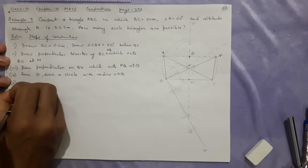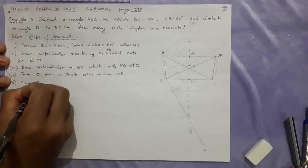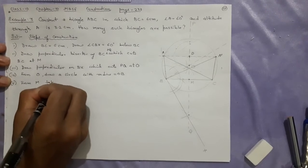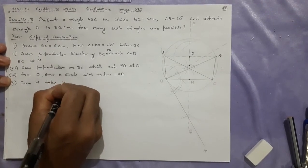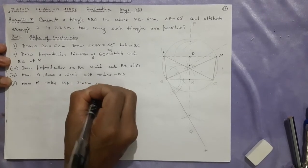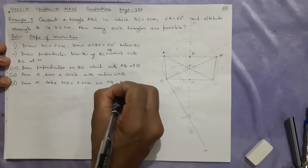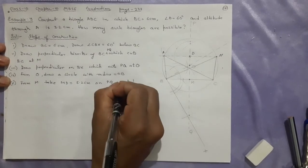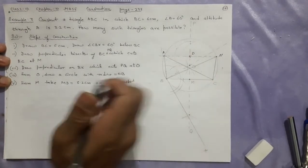Now when I draw the circle, everything is okay. Number five: From M, take MD equal to 3.2 centimeters on PQ. MD you have already written.